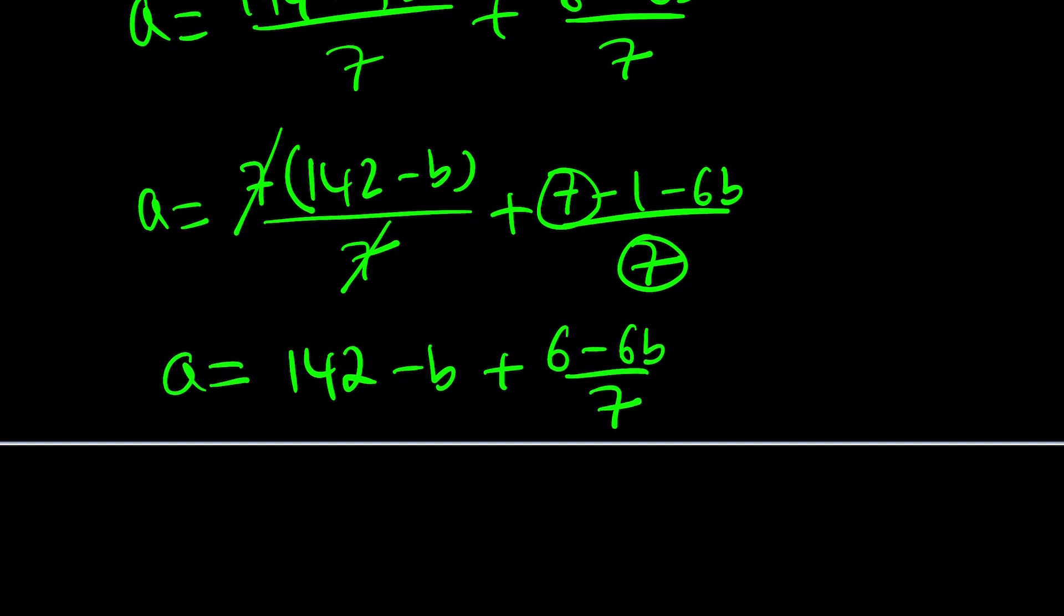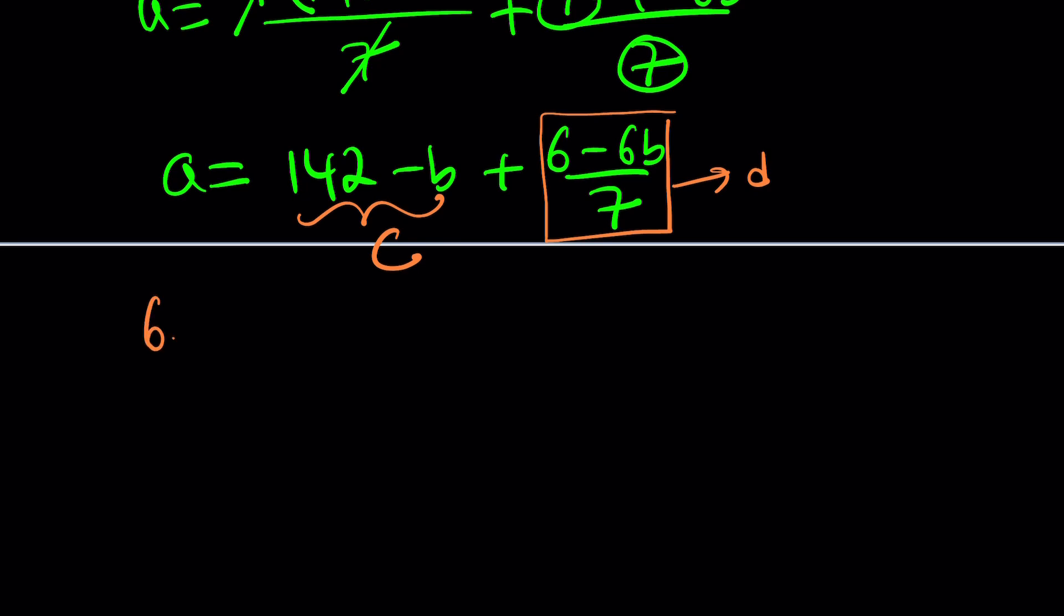This is my A. Let's call these pieces something. This part we can call C, and this part we can call D. Remember, C is an integer. A is an integer. So D is also an integer. What is that supposed to mean? It just means that 6 minus 6B over 7 is an integer like D.